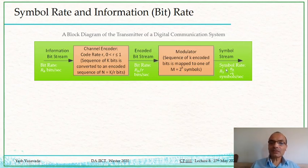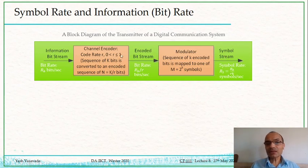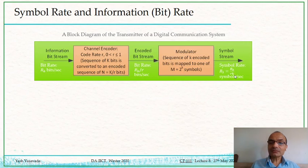Finally, our relationship becomes: symbol rate Rs = RB divided by (r times k). Because of the encoder operating at code rate r — which is always less than 1 — the overall transmission rate goes up. On the other hand, because of modulation, the symbol rate always comes down, since the smallest value of k is 1, which is BPSK.